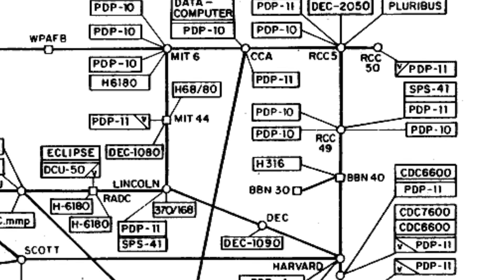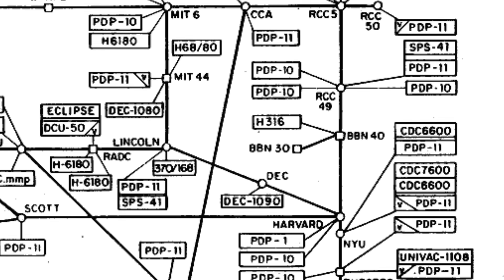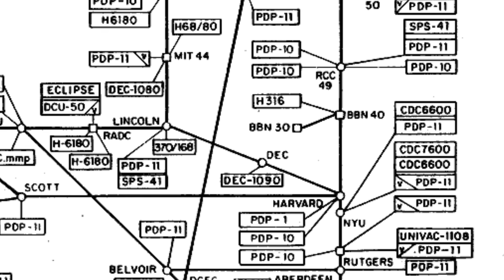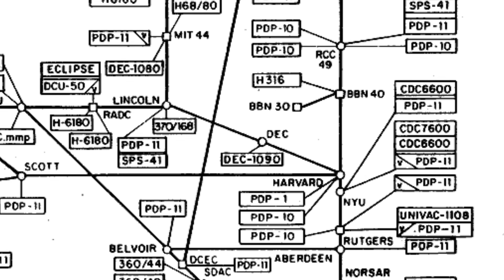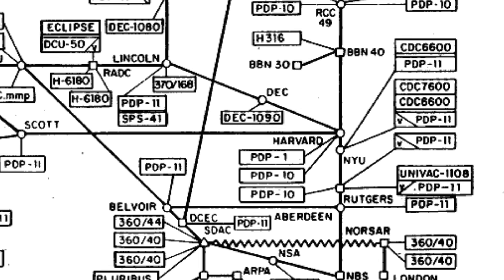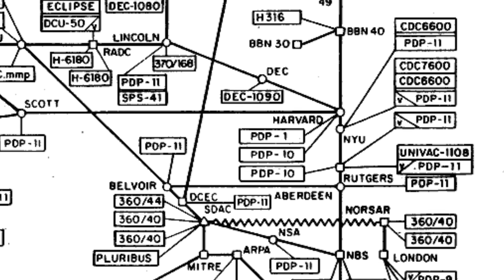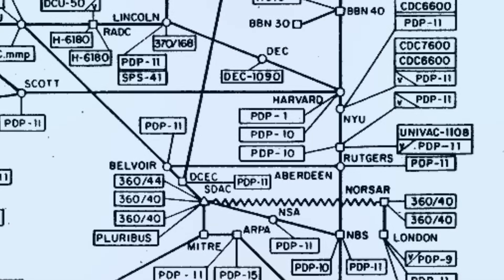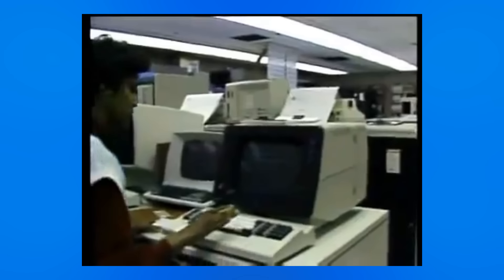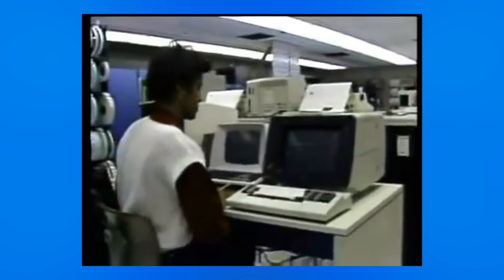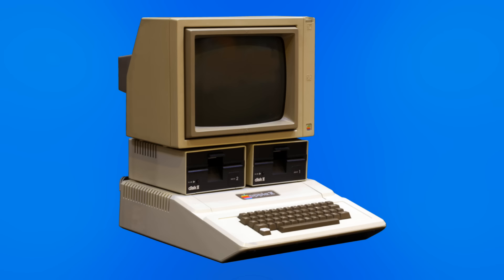One of the main reasons these worms were so effective was the fact that they were set loose on multi-user systems, meaning that a worm could either propagate by way of a network, like with Creeper, or through resources shared between users, in the case of Animal. But that's not to say that personal computers were entirely immune to these types of programs — all it took was a small tweak in the mechanism they used to spread.